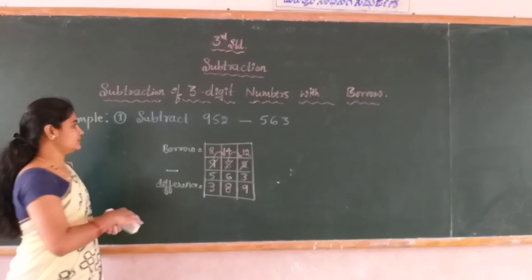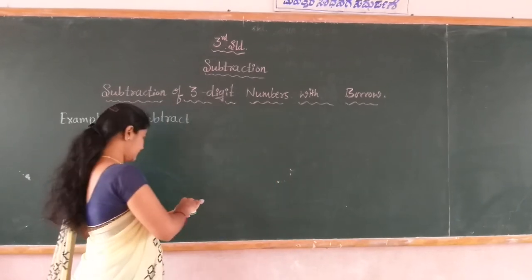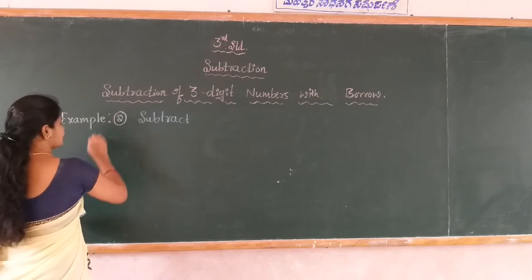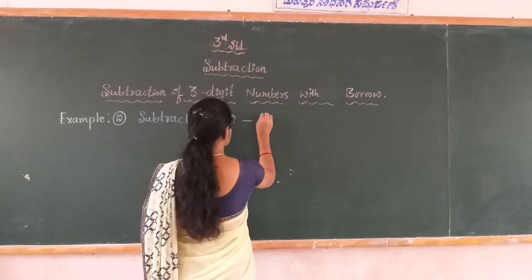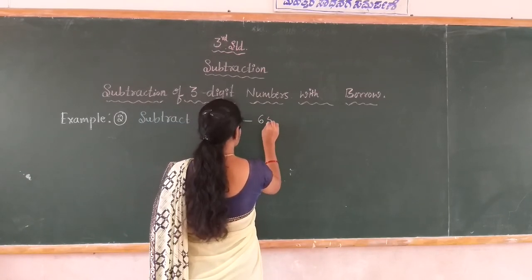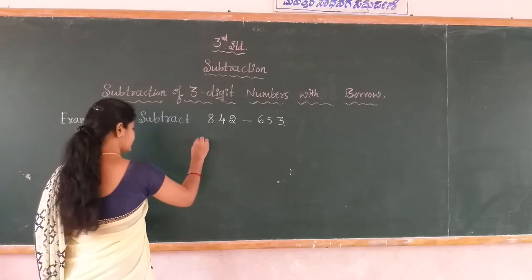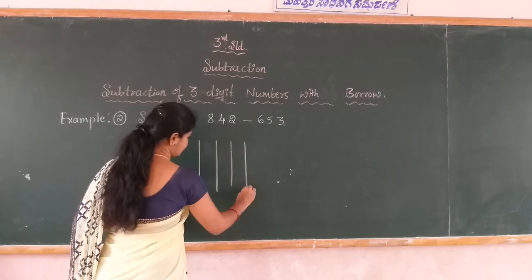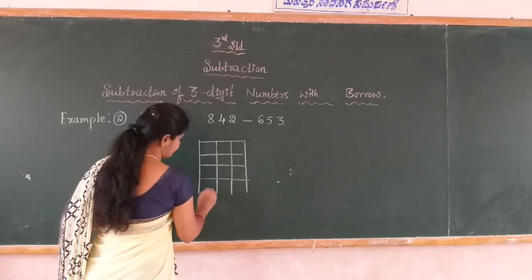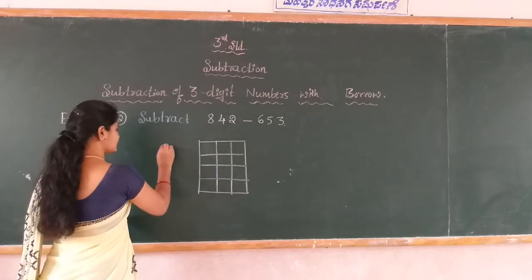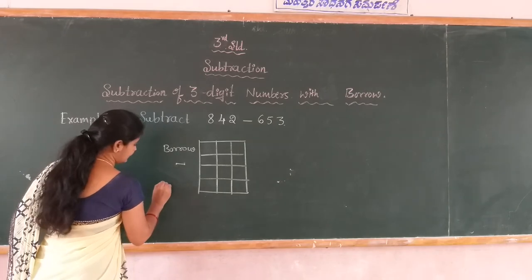I will take one more example. Example 2: subtract 842 minus 653. First you write the subtraction box with the borrow row. This is the minus sign, and the answer will be the difference.